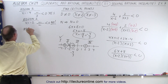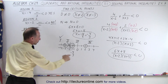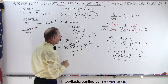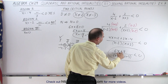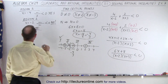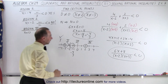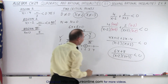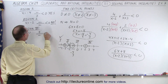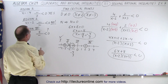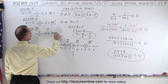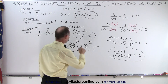Region 3: we have an easy pick — let x equal 0. If x equals 0, we have 0 plus 8, which is a positive numerator. In the denominator, if x is 0 we have negative 2 times positive 3, which is negative. So positive over negative — is that less than 0? Yes, because this gives a negative number. So region 3 is part of the solution.